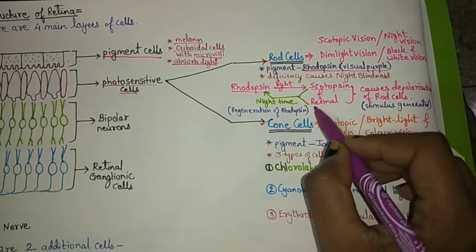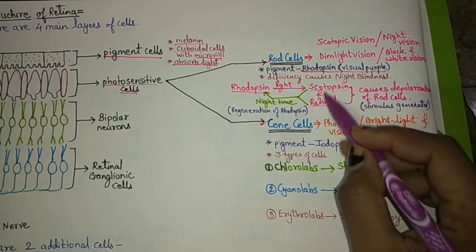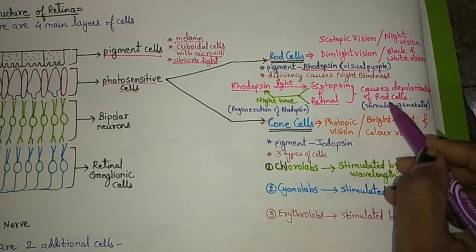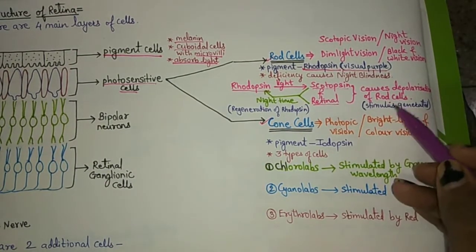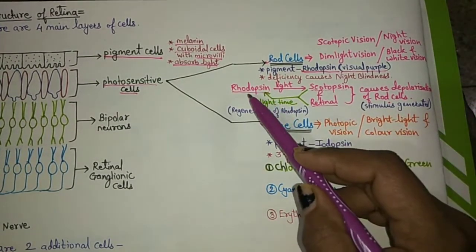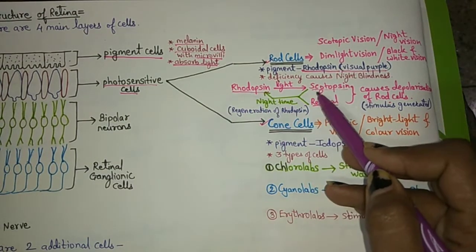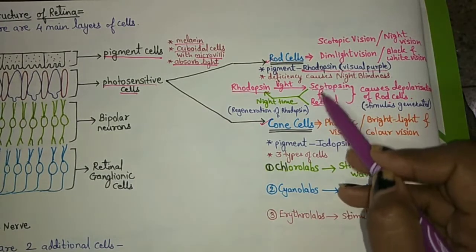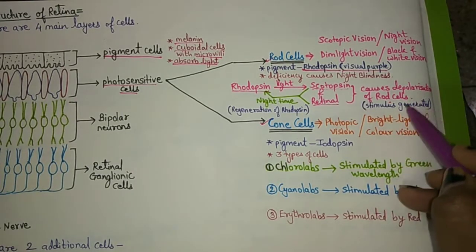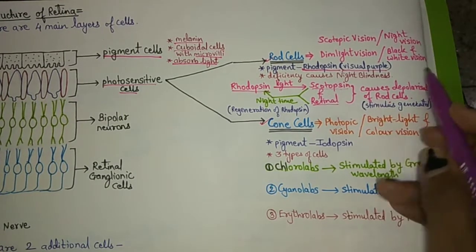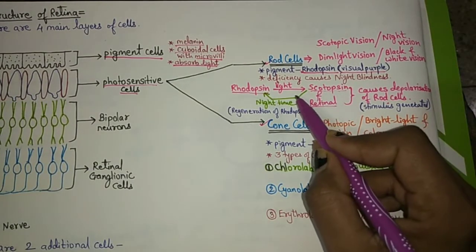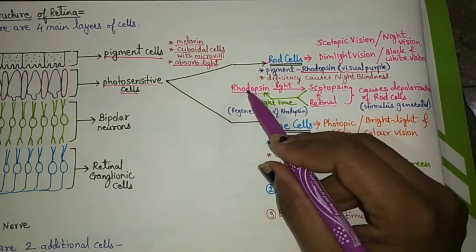When light falls on rhodopsin, it breaks down into two products: scotopsin and retinal. These two products cause the depolarization of the rod cells, generating a stimulus. During the night, scotopsin and retinal recombine to regenerate the rhodopsin pigment.